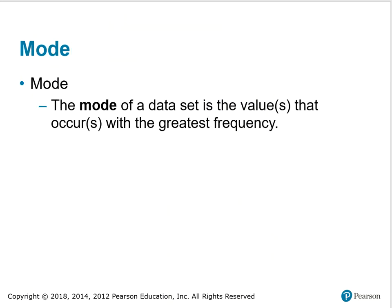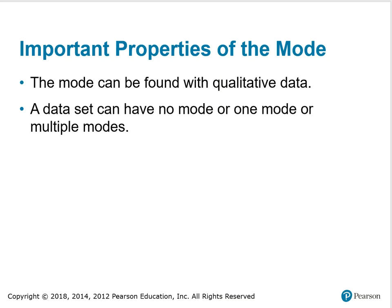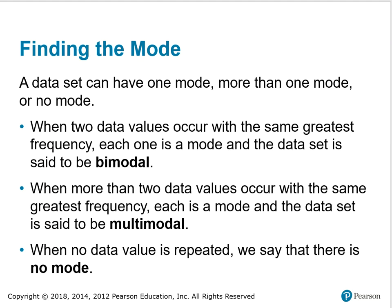The next measure of center is the mode. The mode of a data set is the value or values that occurs or occur with the greatest frequency. The important properties of the mode: The mode can be found with qualitative data, and that's data that's nominal that doesn't have order implied, or maybe has order but it's more names of things versus numerical values. A data set can have no mode, one mode, or more than one mode. When two data values occur with the same greatest frequency, each one is a mode and the data set is said to be bimodal. When more than two data values occur with the same greatest frequency, each is a mode and the data set is said to be multimodal. When no data value is repeated, we say that there is no mode.